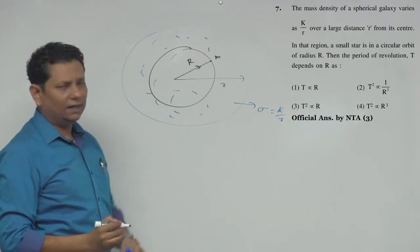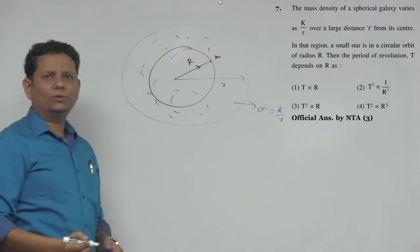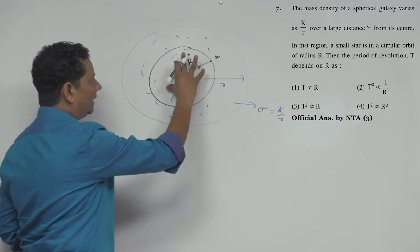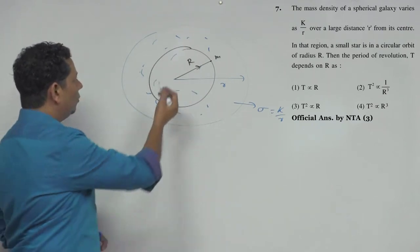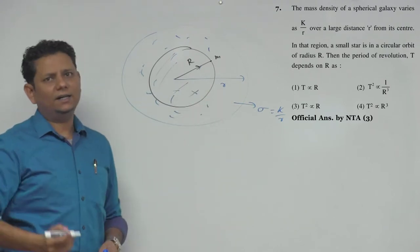We need to find what the time period will be and the relation between T and r. This particle, this star doing circular motion, the reason will be gravitational force acting inward, which will provide the necessary centripetal force.